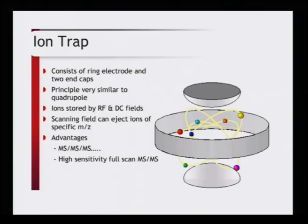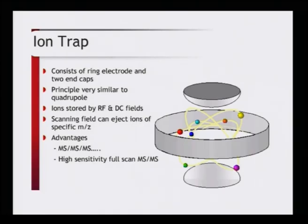The ion trap consists of a ring electrode and two end caps, with a principle very similar to the quadrupole. Ions are stored by RF and DC fields, and the scanning field can eject ions of a specific mass-to-charge ratio. Its advantage is high sensitivity and the ability to be applied to hyphenated MS/MS systems, where multiple mass spectrometry stages are coupled together.